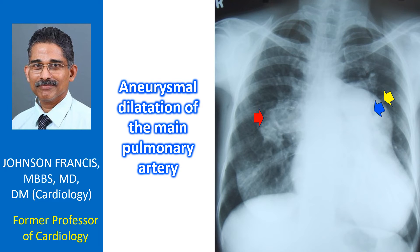Primary pulmonary hypertension is another cause for such grossly dilated main pulmonary artery and branch pulmonary arteries.